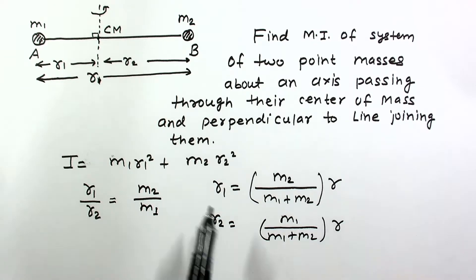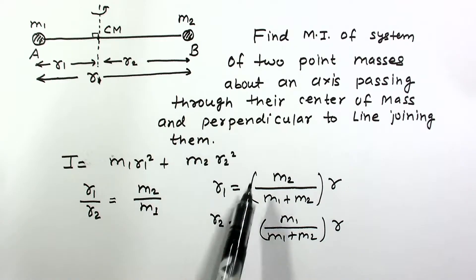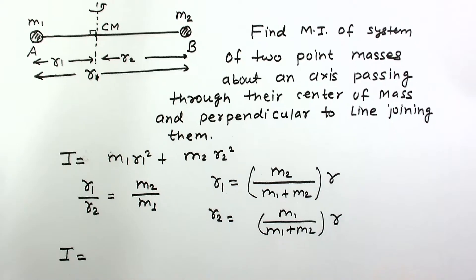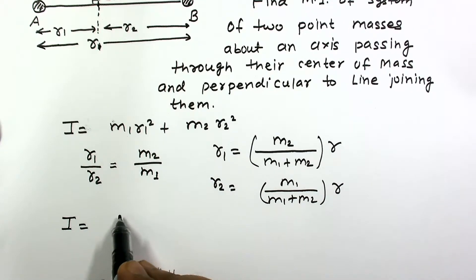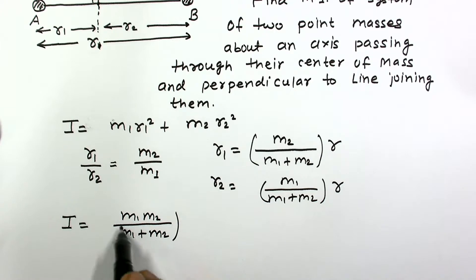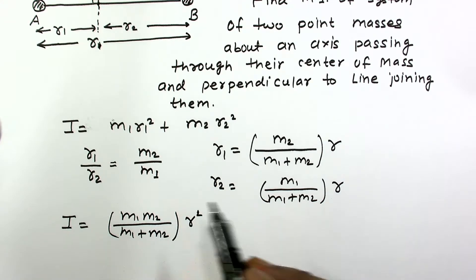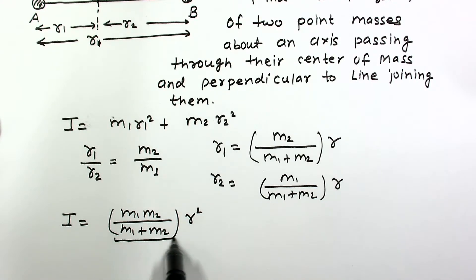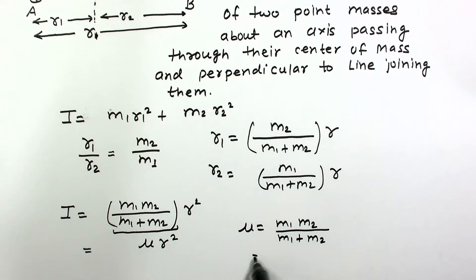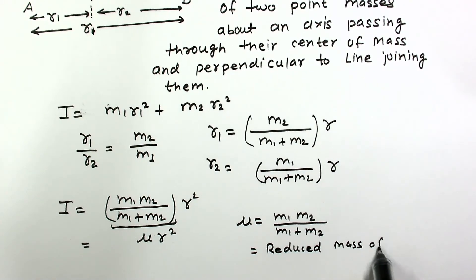So simply we have to substitute R1 and R2. The moment of inertia becomes M1 M2 divided by M1 plus M2 times R squared. This factor M1 M2 divided by M1 plus M2 is called reduced mass of system.